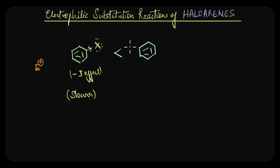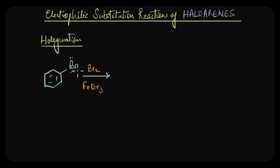So let's now take an example of a substitution reaction, let's say halogenation. So here we have bromobenzene reacting with bromine in the presence of FeBr3. We know that this mixture will produce an electrophile which is Br plus.